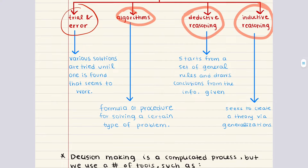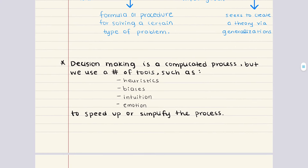This leads into decision making. We make decisions every day — some insignificant, some very important. The things that contribute to decision making include heuristics, biases, intuition, and emotion, which all speed up or simplify the process.